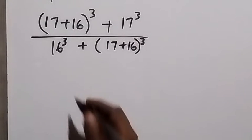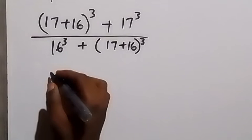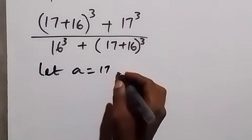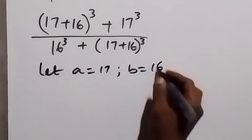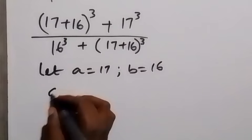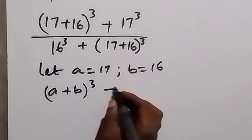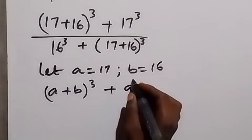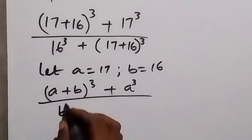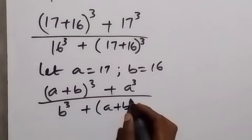In the next step, let's use a letter to represent 17 and a letter to represent 16. So let a be equal to 17 and b be equal to 16, such that here this becomes a plus b raised to power 3, then plus a raised to power 3, then divided by b raised to power 3, plus a plus b raised to power 3.